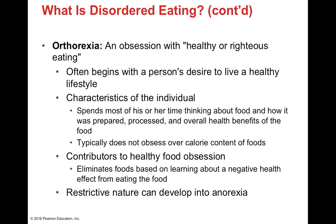Orthorexia is an individual who is obsessed with healthy, righteous eating. It typically starts with good intentions and a desire for a healthy lifestyle, but gets to the point where it becomes an obsession. They spend most of their time thinking about how food was prepared, whether it was processed properly, and its health benefits — obsessing more about micronutrient concentrations than caloric content. They eliminate foods based on learning one negative health effect, which eventually becomes food restrictive. These individuals can get to the point of near-anorexic conditions because they've restricted so many foods for fear of toxicity or poor preparation.